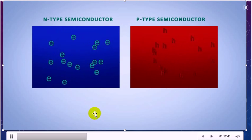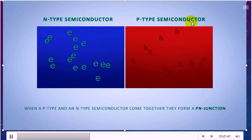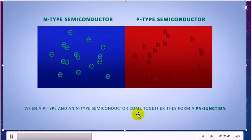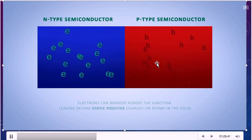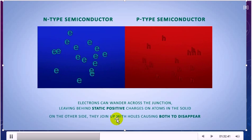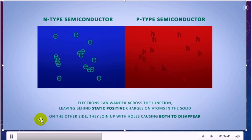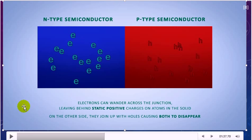This is the n-type semiconductor and the p-type semiconductor. When they come together, they form a PN junction. Electrons can wander across the junction, leaving behind static positive charge on atoms in the solid. On the other side, they join up with holes causing both to disappear.